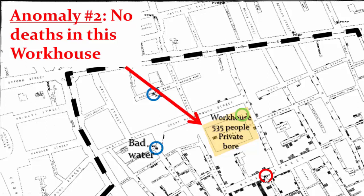The second anomaly: there was a workhouse with 535 people living in it, but no one there had died of cholera. It turned out that the workhouse had its own private bore, and they weren't using the water from the Broad Street pump — they were using their own water. So, of course, nobody had died.